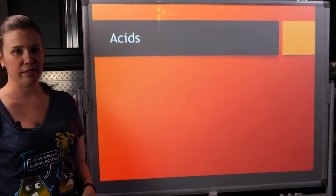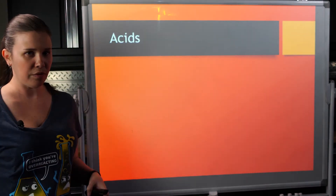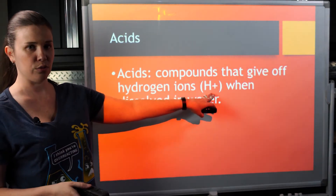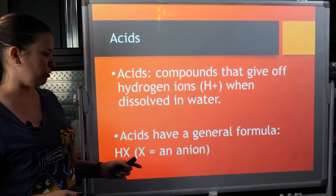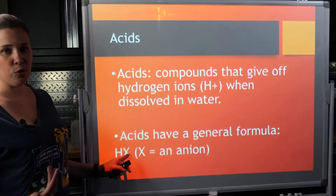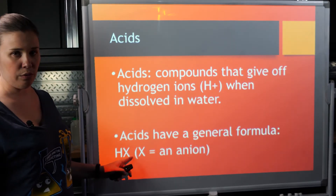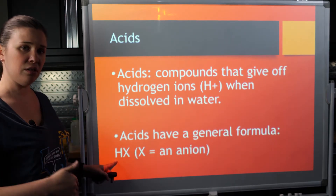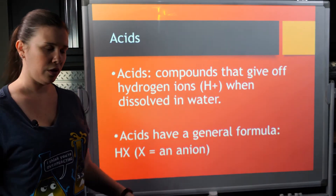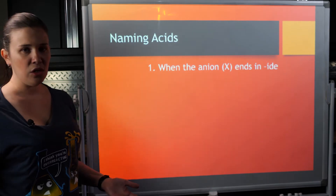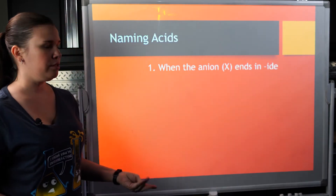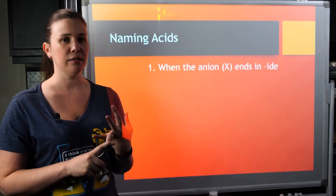Now let's move on to acid naming. Acids are actually a type of ionic compound, but a special type. With acids, the cation is always hydrogen, H+, attached to some anion. The anion can be a single atom like HCl, or a polyatomic ion like HNO3. Any type of anion where H is in front of the molecule makes it an acid — those H's are given off when dissolved in water. To name an acid, you really have to know what the ending was before the anion bonded to the H: whether it's an -ide, -ate, or -ite type of anion.